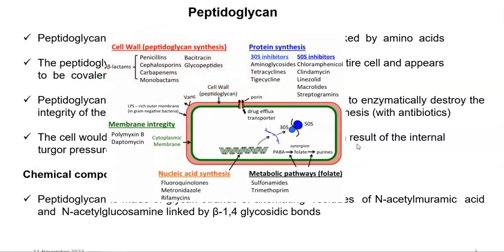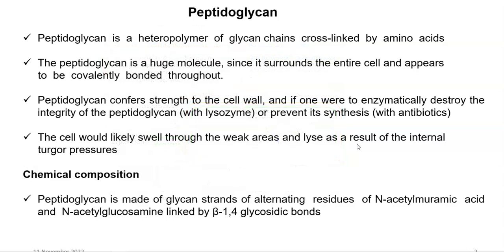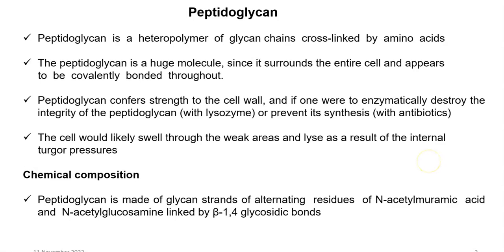By adding certain antibiotics, you can prevent the synthesis of peptidoglycan in the cell. If there is no peptidoglycan or cell wall, the cell would swell through weaker areas and may even lyse as a result of internal turgor pressures.